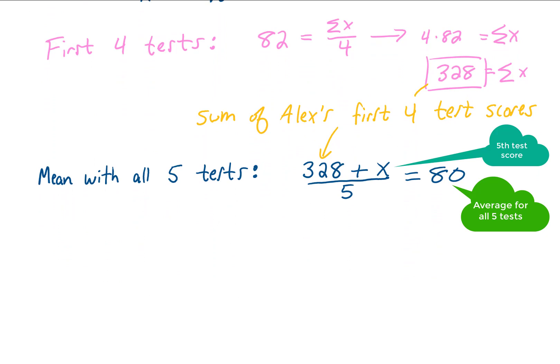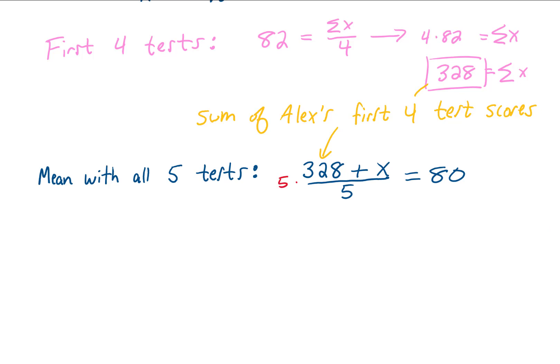To solve for x, the first thing we should do is multiply both sides of the equation by 5 to get rid of the 5 in the denominator on the left side. Those 5s on the left will cancel, and we'll be left with 328 plus x on the left, and 80 times 5 equals 400 on the right.